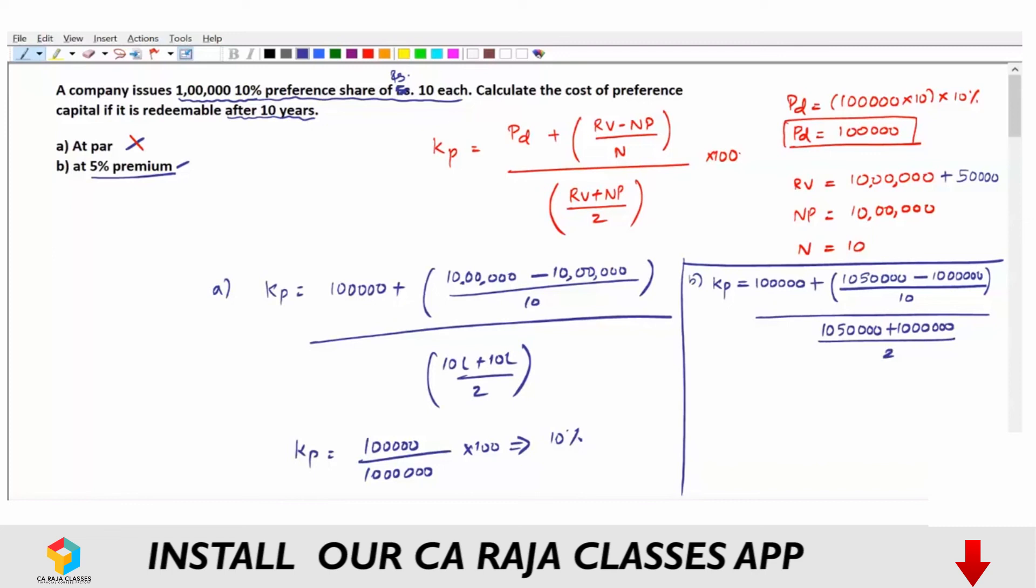Now let us see. 10,50,000 minus 10,00,000 is 50,000. So 50,000 divided by 10 is equal to 5,000. So 1,00,000 plus 5,000 is 1,05,000 divided by 10,50,000 plus 10,00,000 by 2, which gives you 10,25,000. Multiply that by 100. So you will get cost of preference share is equal to 10.24 percentage.